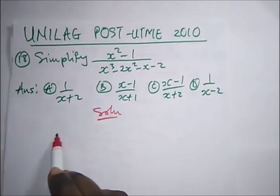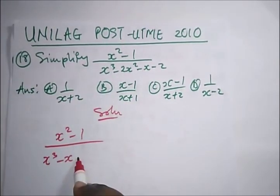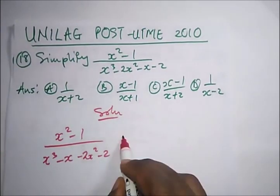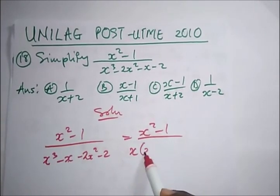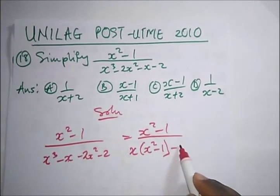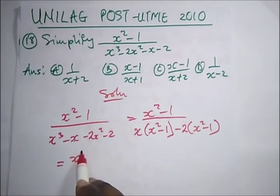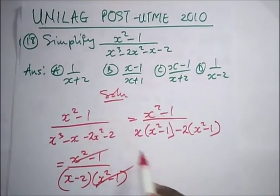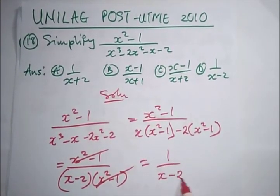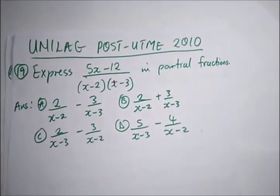The next question says: simplify the given expression. We factorize the denominator. Rearranging: (x³ − x) − (2x² − 2). Factoring: x(x² − 1) − 2(x² − 1) = (x − 2)(x² − 1). The numerator is x² − 1, so it cancels, leaving 1/(x − 2). The correct option is D.